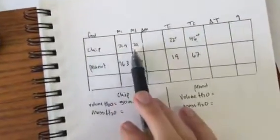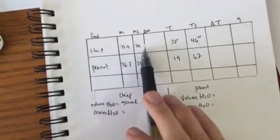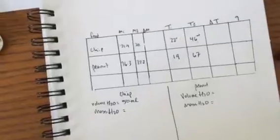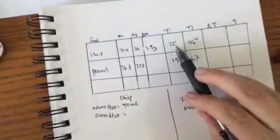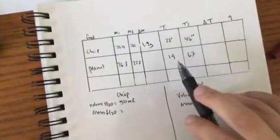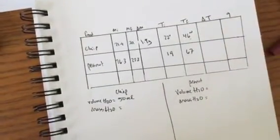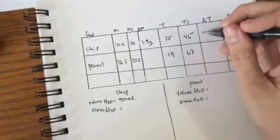You burned a chip and you found the initial mass was 21.9, the final was 20, which means your change in mass is 1.9 grams. You found the change in temperature went from 22 to 46 degrees, so your change in temperature was 27 degrees.